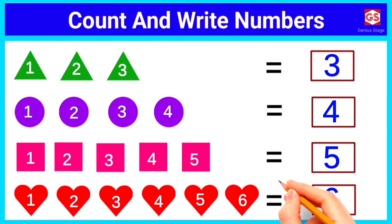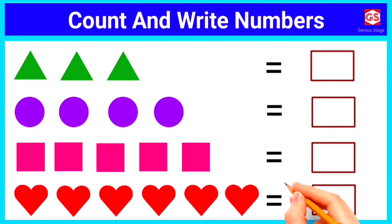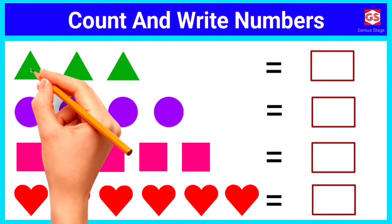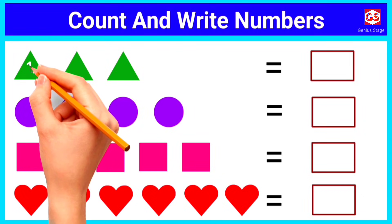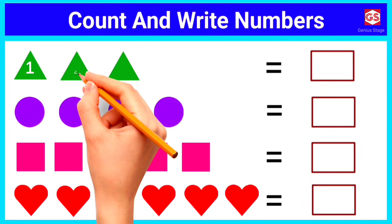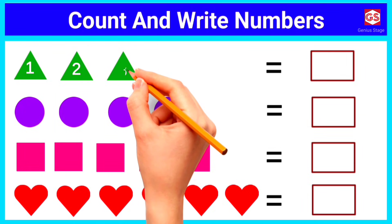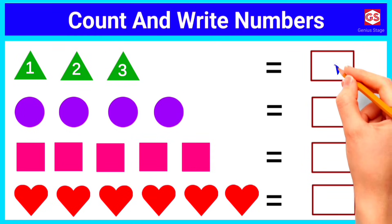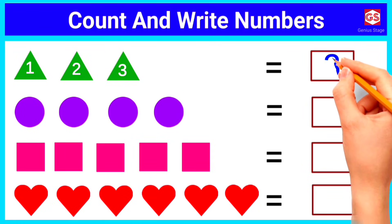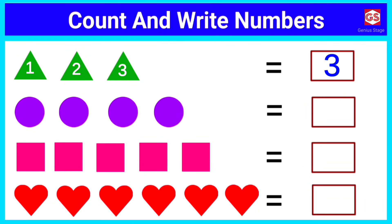Let's repeat it one more time. In the first question, let's count the triangles. 1, 2, 3. There are 3 triangles in total.